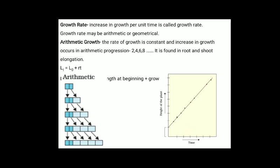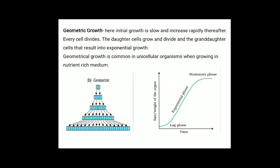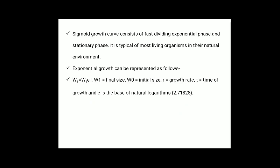Taking a graph with x-axis as time and y-axis as length or height of the plant, in geometric growth the initial growth is low and increases rapidly thereafter. Every cell divides, the daughter cells grow and divide, and granddaughter cells result in exponential growth. Geometrical growth is common in unicellular organisms growing in a nutrient-rich medium. The graph of geometric growth shows a lag phase, then an exponential phase, and lastly a stationary phase. The sigmoid growth curve consists of a fast-dividing exponential phase and a stationary phase, and is typical of most living organisms in their natural environment.